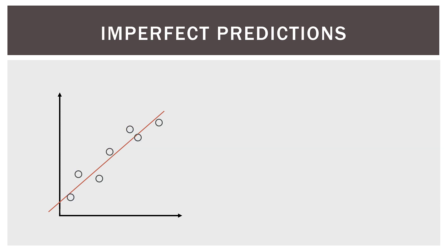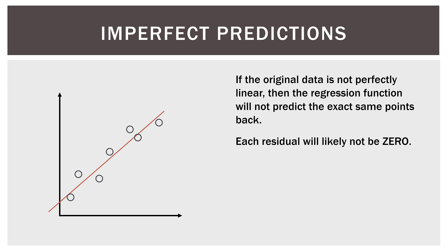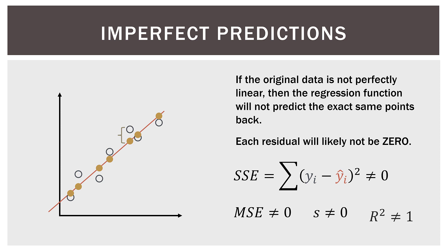In real life, we have imperfect predictions. If the original data is not perfectly linear, then the regression function will not predict the exact same points back. Each residual will likely not be zero — it's possible one data point falls directly on the line, but most will not. There will be a difference between the predicted value that falls on the line and the observed value (the open circle). That is the residual. So the SSE will not be zero, the MSE will not be zero, and R square will not be one.